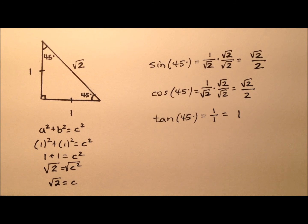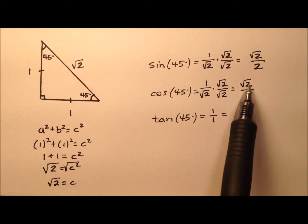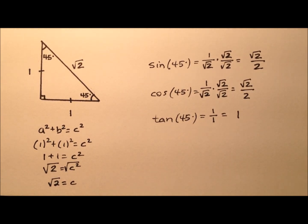So here's how you can use an isosceles right triangle paired with the Pythagorean theorem to find the exact values for sine, cosine, and tangent, all of 45 degrees.